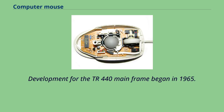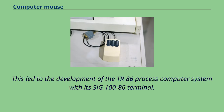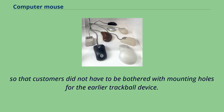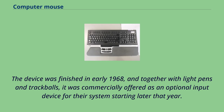Development for the TR440 mainframe began in 1965, leading to the TR86 process computer system with its SIG-100-86 terminal. Inspired by a discussion with a university customer, Malibran came up with the idea of reversing the existing Rollkugel trackball into a movable mouse-like device in 1966, so that customers did not have to be bothered with mounting holes for the earlier trackball. The device was finished in early 1968 and commercially offered as an optional input device that same year.